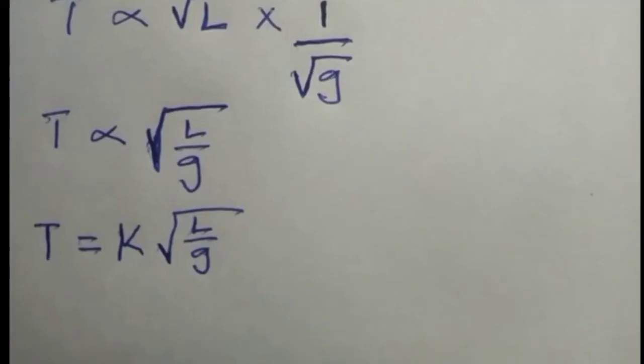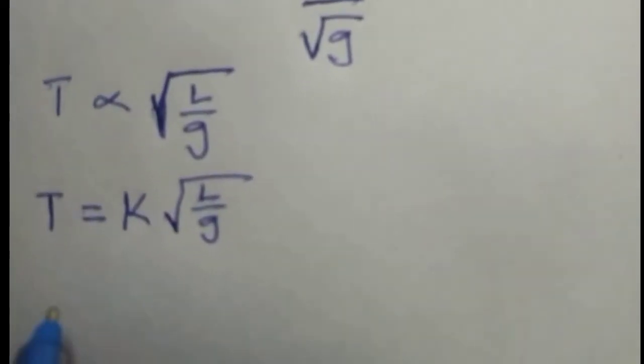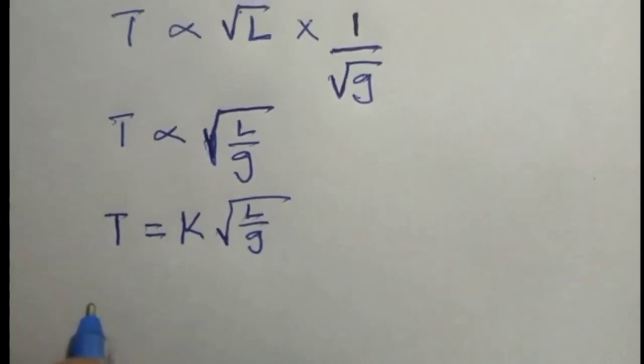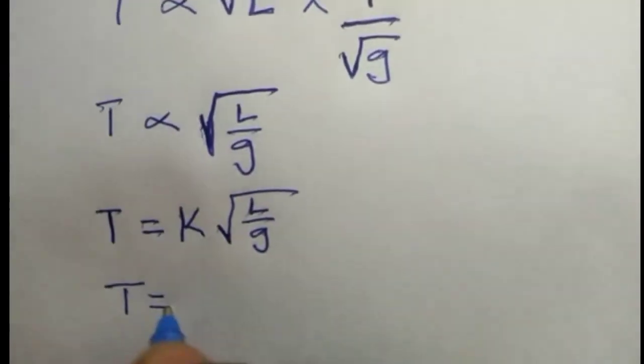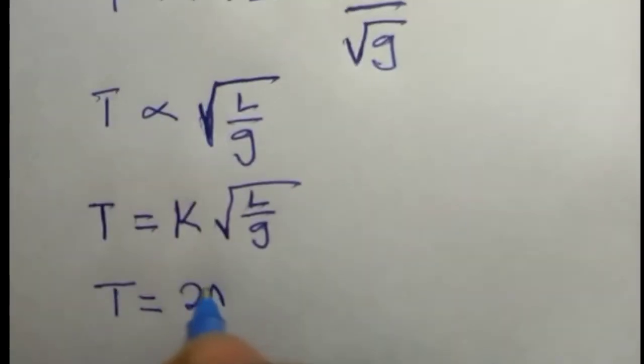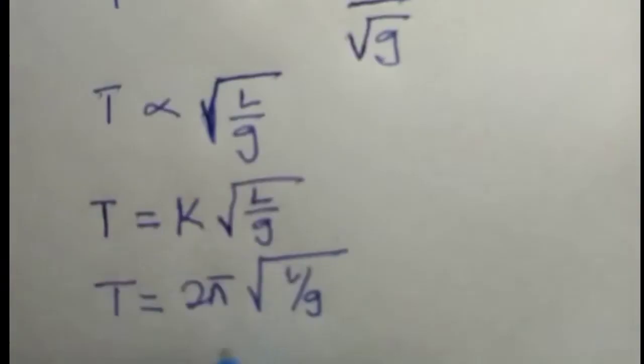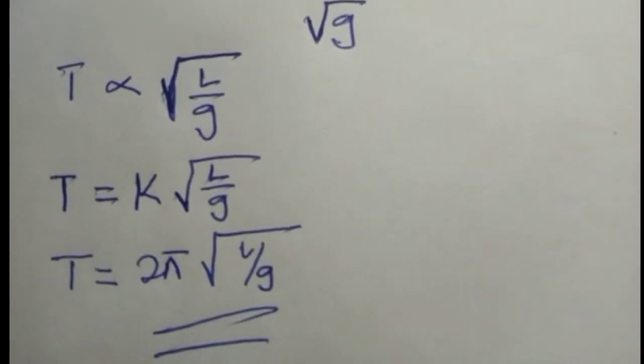Now if you know simple harmonic motion variables, you'll see that this formula is kind of familiar. And the k stands for 2π, so 2π root L over g. This is the direct formula.